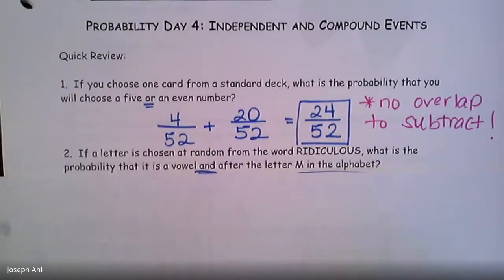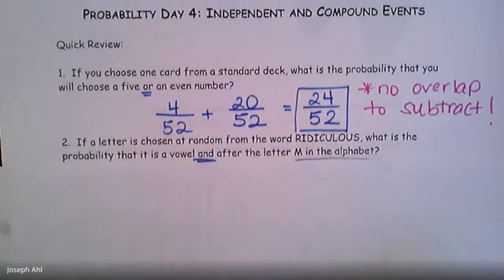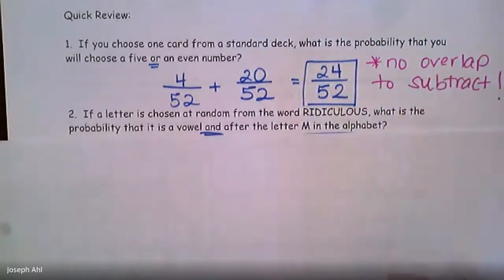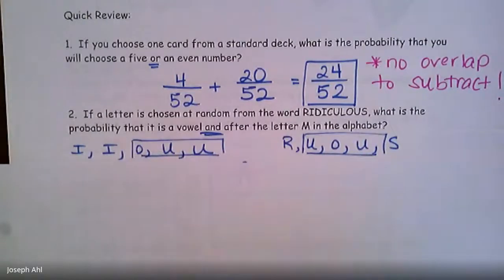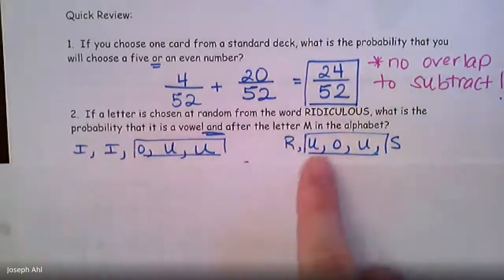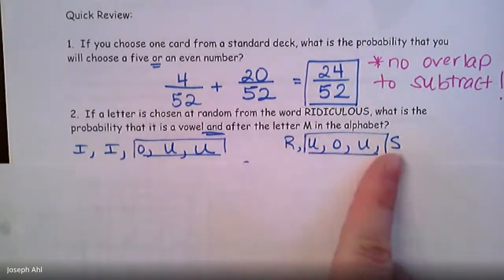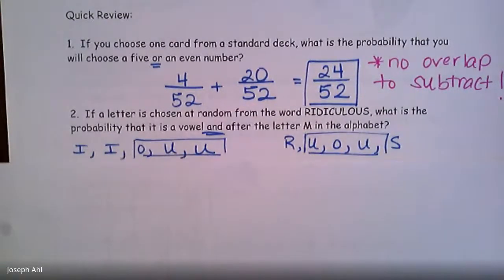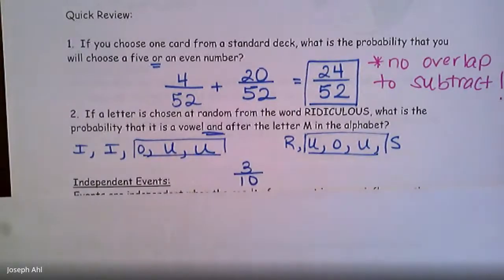In the next question, you're looking at the word 'ridiculous.' What is the probability that a randomly chosen letter is a vowel and comes after the letter M in the alphabet? When you see the word 'and,' that means overlap — what do these two groups have in common? Listing them out: the vowels in that word, and the letters that come after M, have the O and both U's in common. So there are three in common out of a total of 10 letters in the word 'ridiculous' — letters that are vowels and come after the letter M.